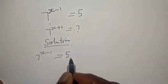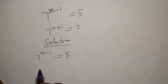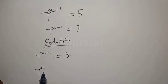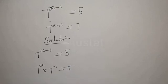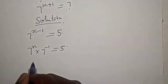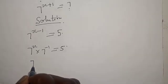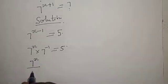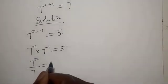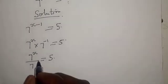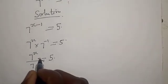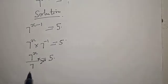This can be expressed as 7 raised to power x multiplied by 7 raised to power minus 1 is equal to 5. Then we have 7 raised to power x over 7 is equal to 5. Now let's cross multiply.